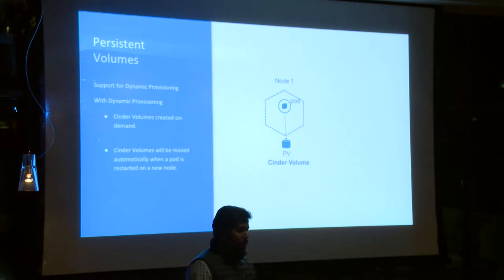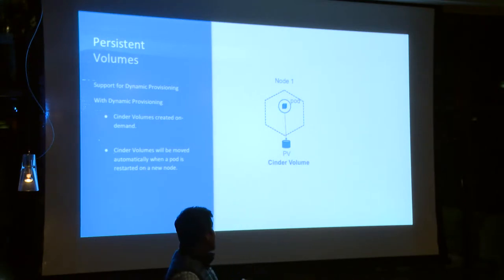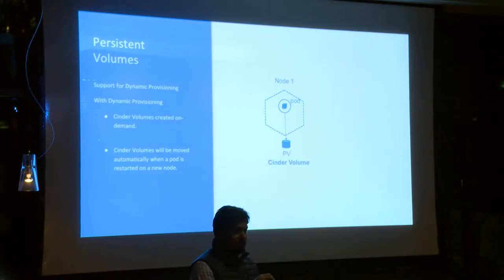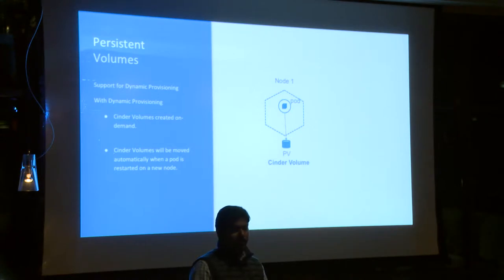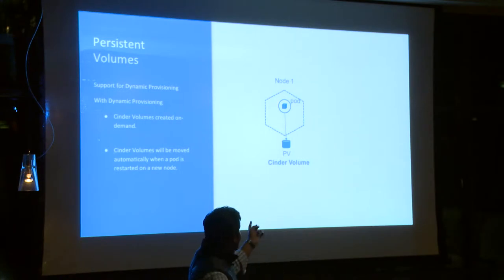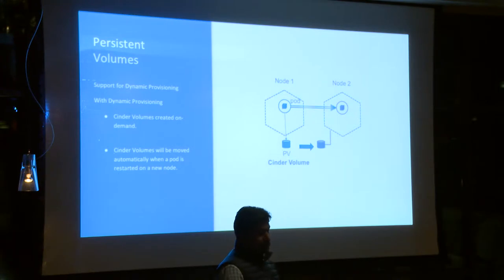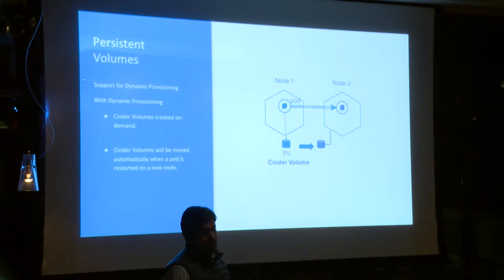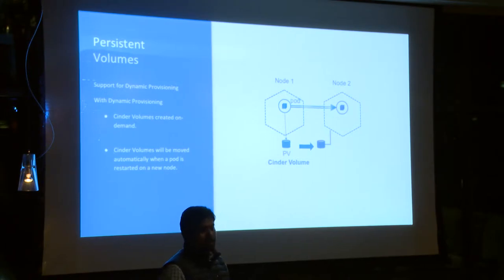What happens if your specific node dies? Kubernetes will make sure the pod comes alive on a different node — just like how Jon Snow got back on Game of Thrones. If your node dies, the pod is brought back on a different node, and the magic is that the Cinder volume gets moved as part of this to the new node as well. All this is taken care of by the cloud provider implementation in Kubernetes for OpenStack.